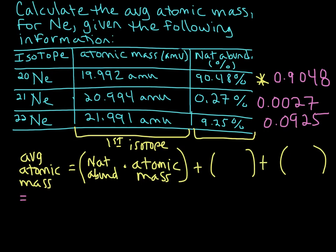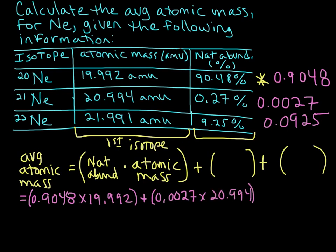For the first one, we're going to have 0.9048 times 19.992. I kind of made a mess out of that, so let's just clean it up a little bit. 0.9048 times 19.992 plus 0.0027 times 20.994 plus the last one, 0.0925 times 21.991.